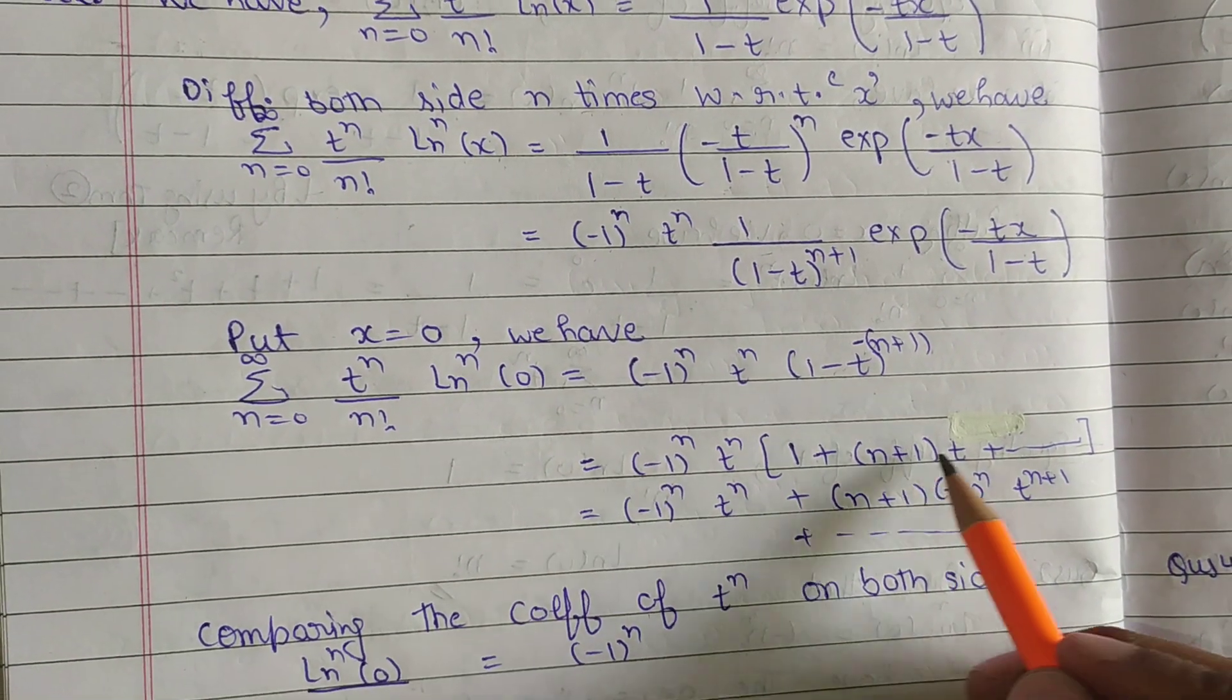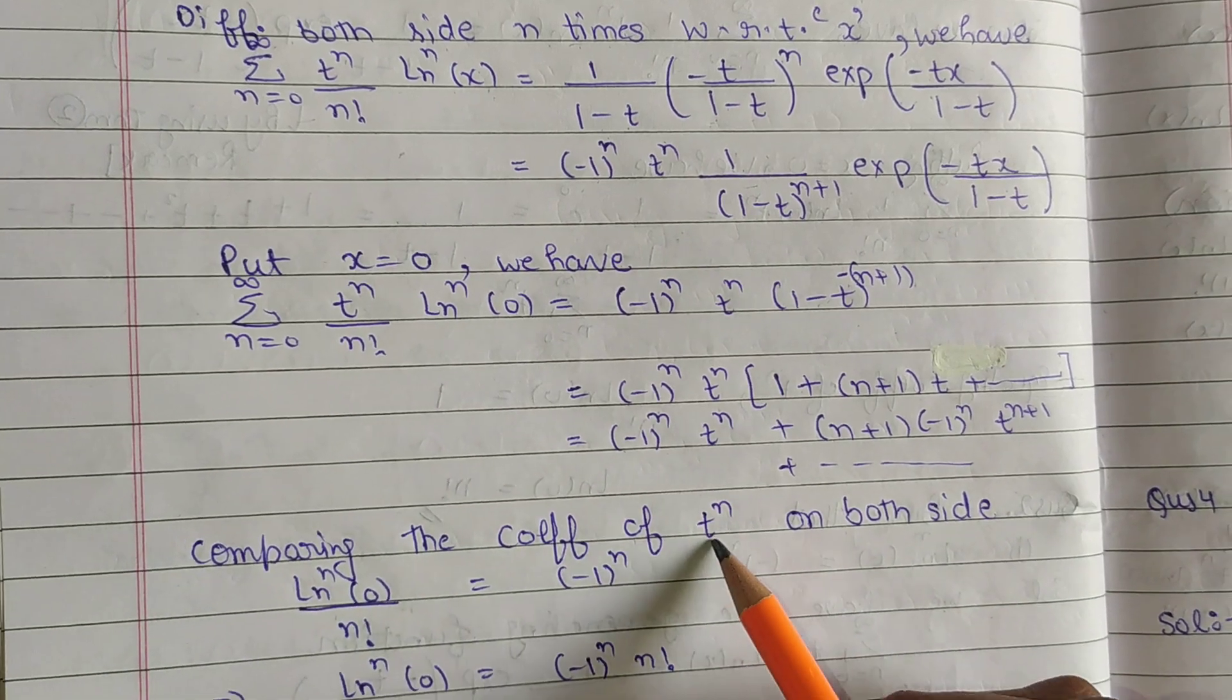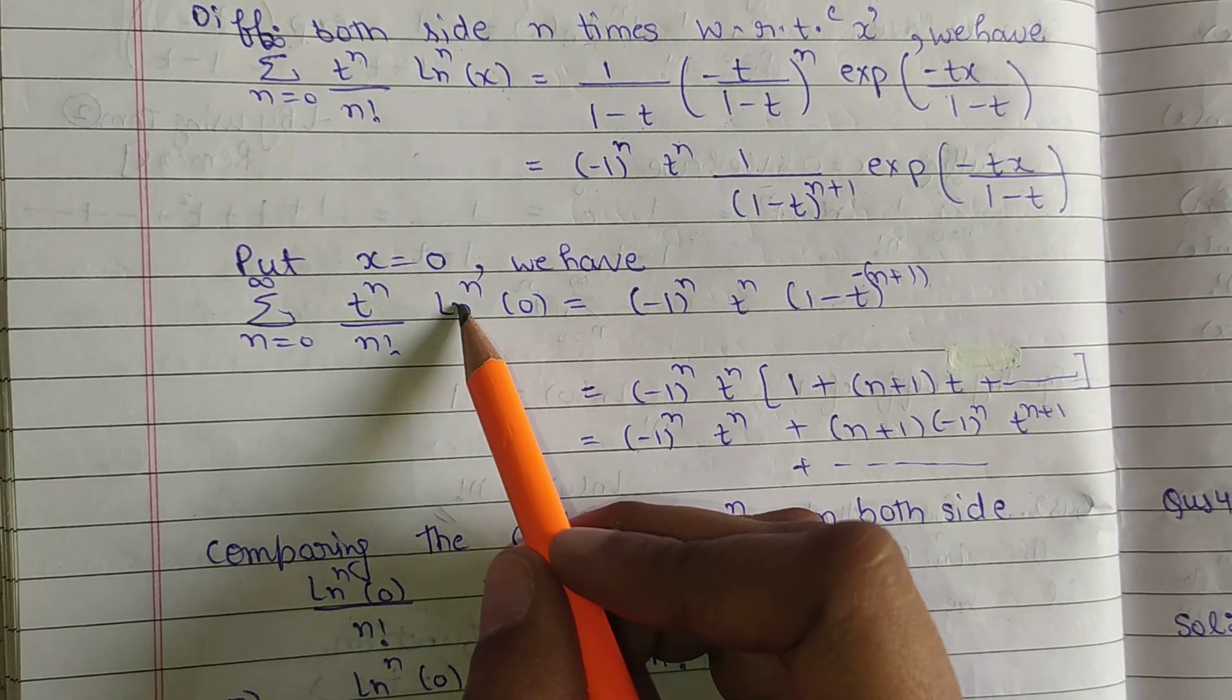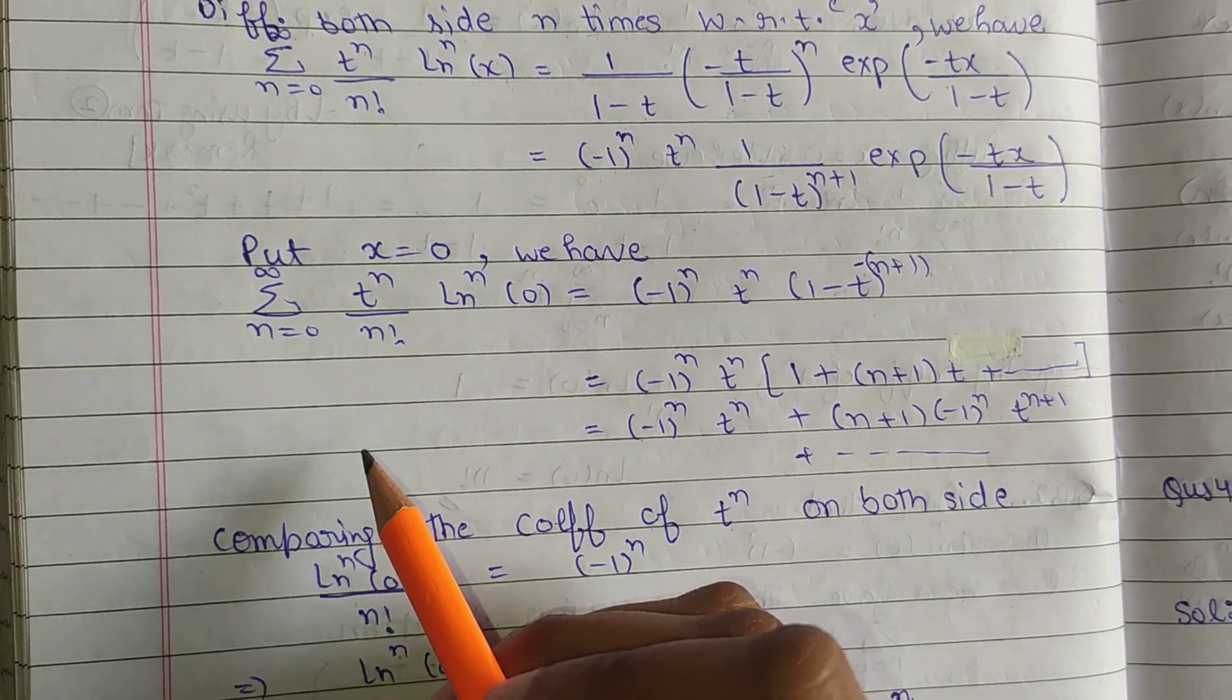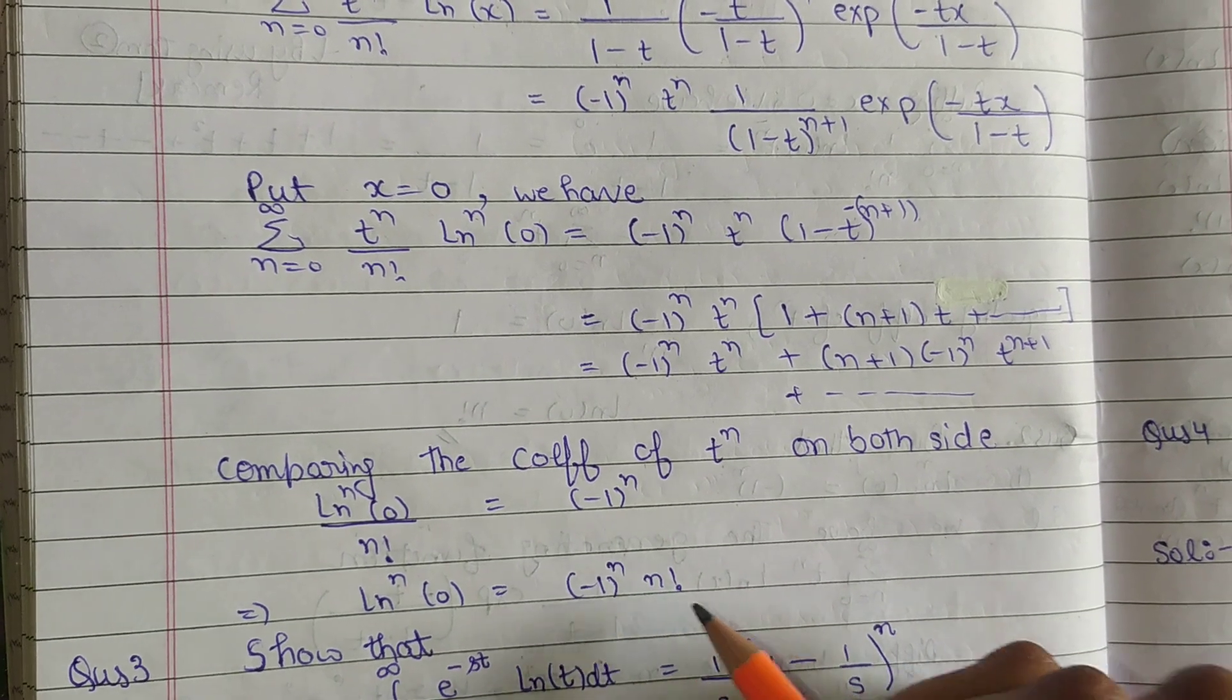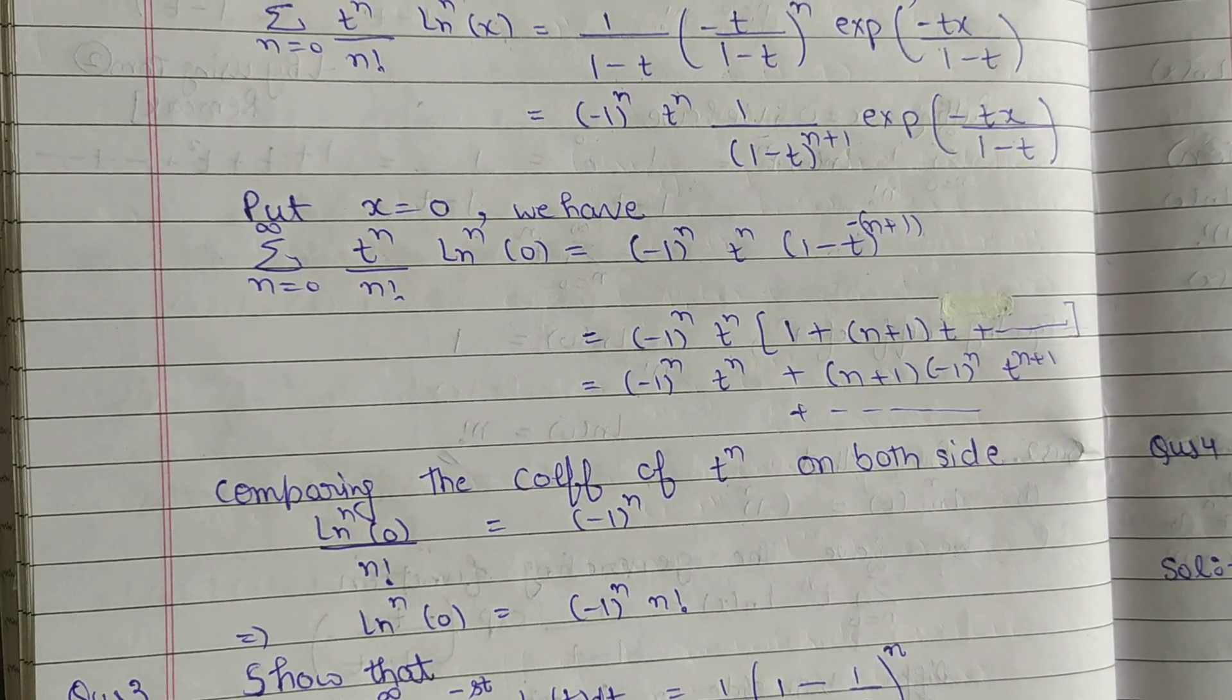We'll expand this. Then comparing the coefficient of t^n, we have (-1)^n and here ln^n(0) is equal to (-1)^n/n!. So ln^n(0) = (-1)^n n!. Thank you.